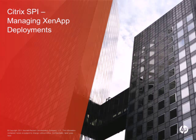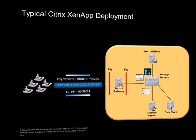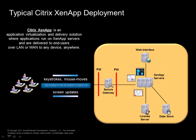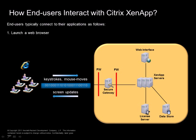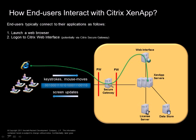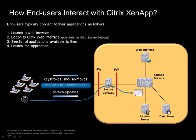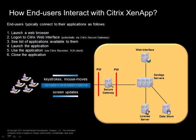Let's take a look at managing Xen App deployments first. Citrix Xen App is an application virtualization and delivery solution where applications run on Xen App servers and are delivered to end users over LAN or WAN to any device anywhere. End users typically interact with Citrix Xen App environments by launching a web browser, logging on to Citrix web interface potentially via Citrix secure gateway, seeing a list of available applications, launching the needed application using Citrix Receiver or ICA client, and closing it at the end.